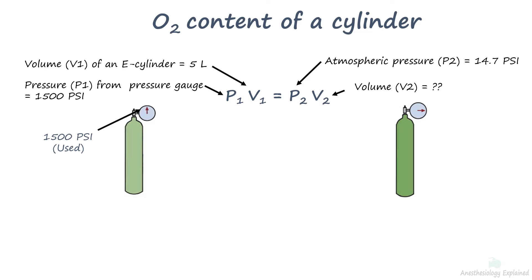We can now use the Boyle's law, P1 V1 equals P2 V2, so V2 equals P1 multiplied by V1 divided by P2. Replacing with values V2 equals 1500 into 5, by 14.7 equals 510 liters. An E-cylinder with the pressure gauge reading of 1500 psi contains 510 liters of oxygen.